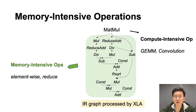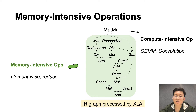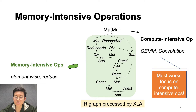Some ops are compute-intensive, like GEMM and convolution ops in neural models. Some other ops are memory-intensive, like element-wise, REDUCE, BROADCAST, and many other types. Existing machine learning compiler works mainly focus on compute-intensive ops, because many traditional models are dominated by compute-intensive ops, like traditional CNN models.